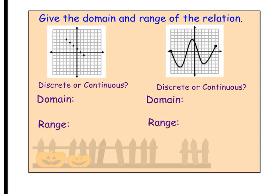So, if I'm looking at the one on the left, you can see there's just points. There's no line connecting it, there's no curve, nothing like that. That means that it is a discrete graph. Just points, no line connecting it. Now, let's talk about the domain and range.